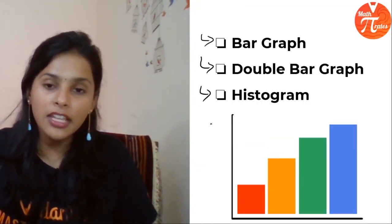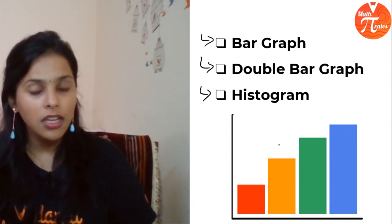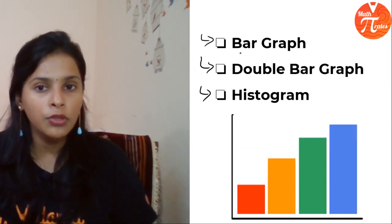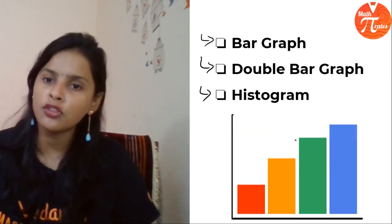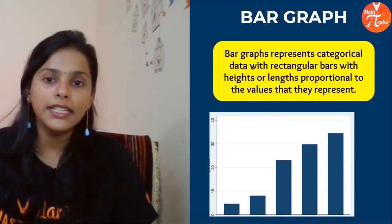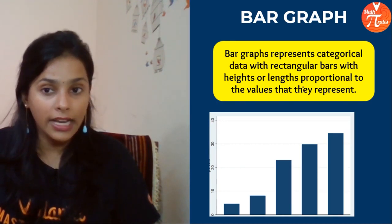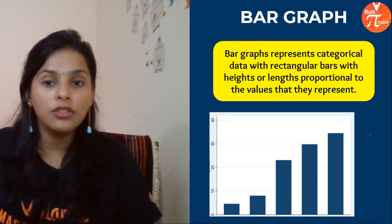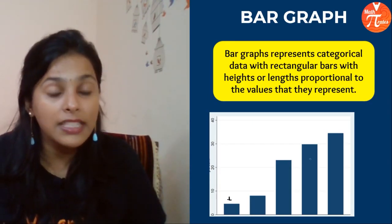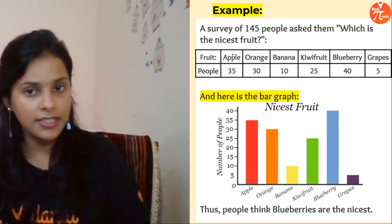Next thing is we are going to represent the data in bar graph, double bar graph, and histogram. They are nothing but you represent the data in rectangular bars. There are some basic differences when you use bar graph, double bar graph, or histogram. Bar graph represents categorical data with rectangular bars with heights or lengths proportional to the values they represent. Can you see different heights of these rectangular bars? They represent different values.